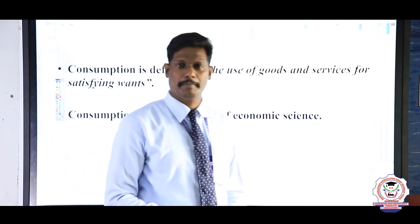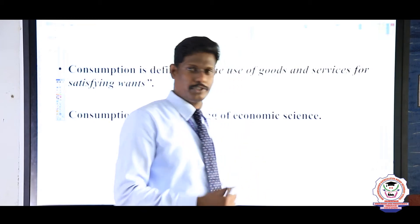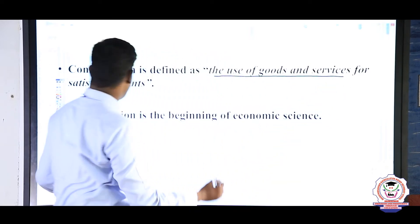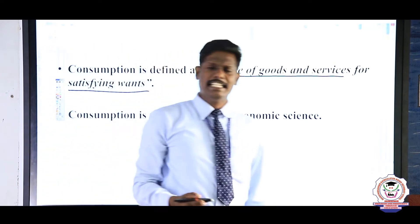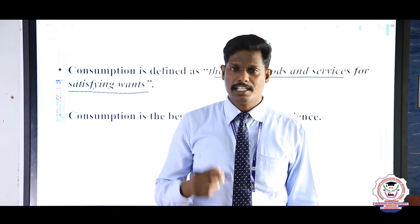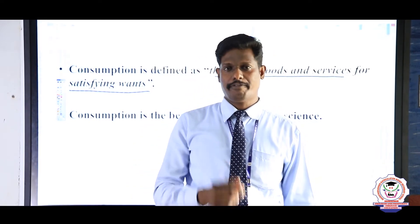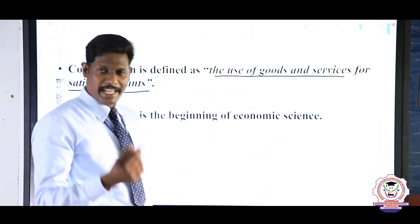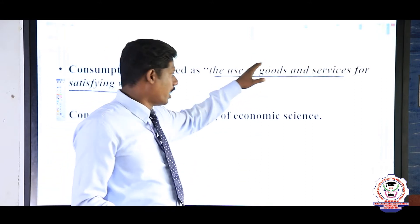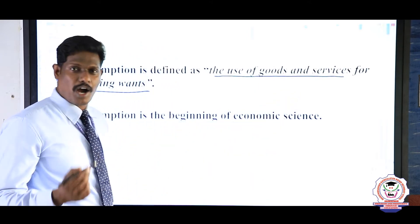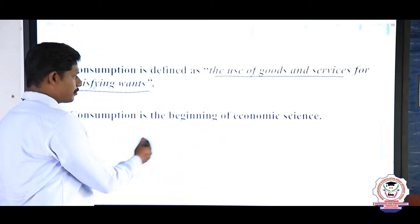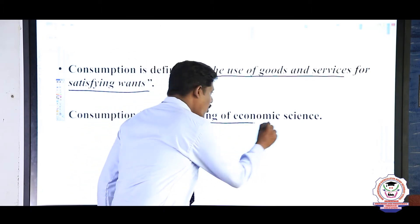Goods and services are used by the consumer after buying or owning them. The use of goods and services for satisfying our wants is key. Each and every consumer in society has many wants. To satisfy those wants, production is done, then distribution, and then consumers achieve satisfaction while using goods and services — that is called want-satisfying power. Consumption is the beginning of all economic activity.